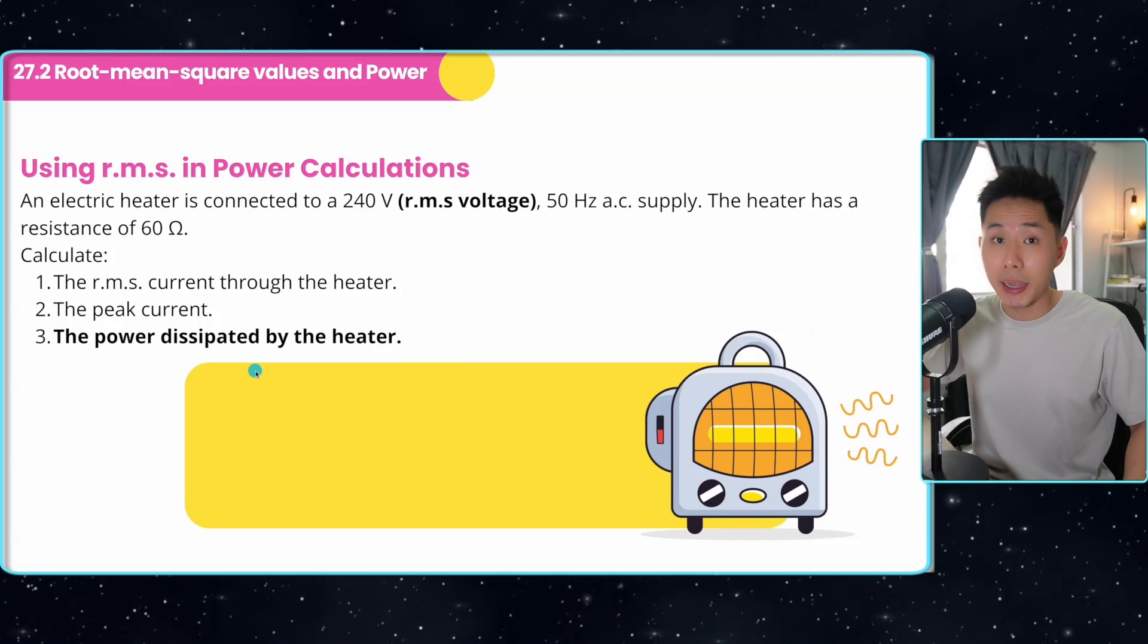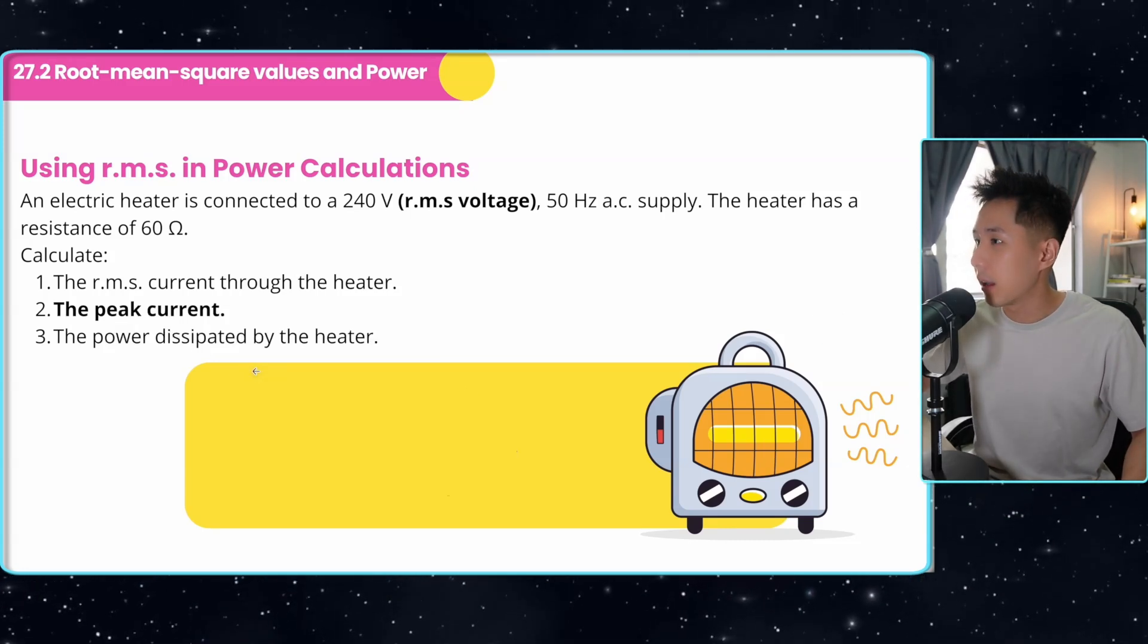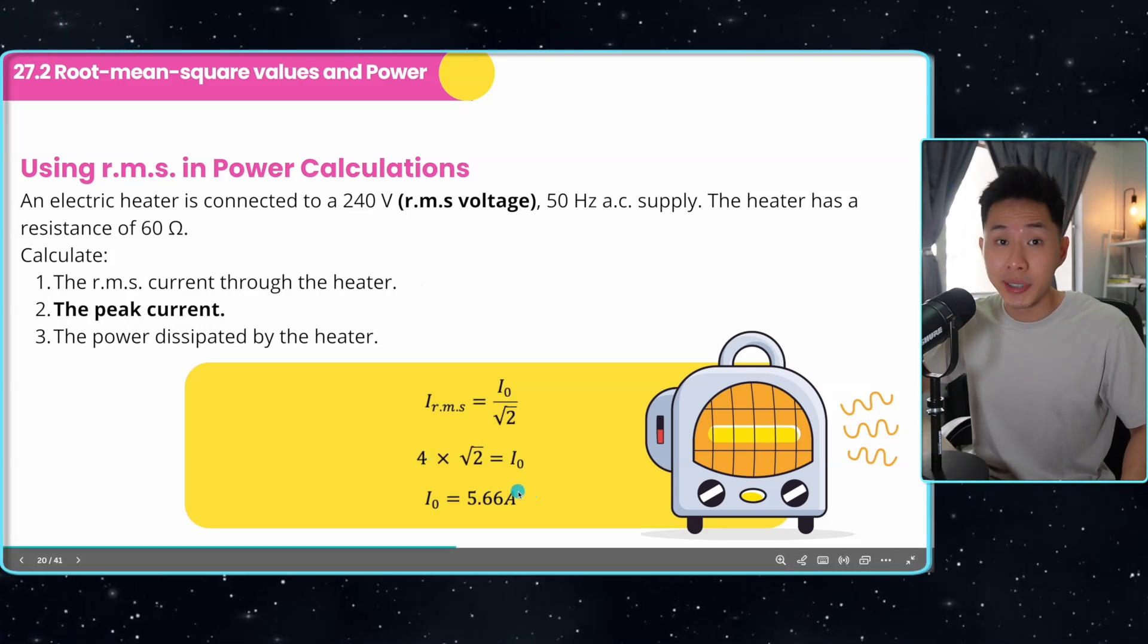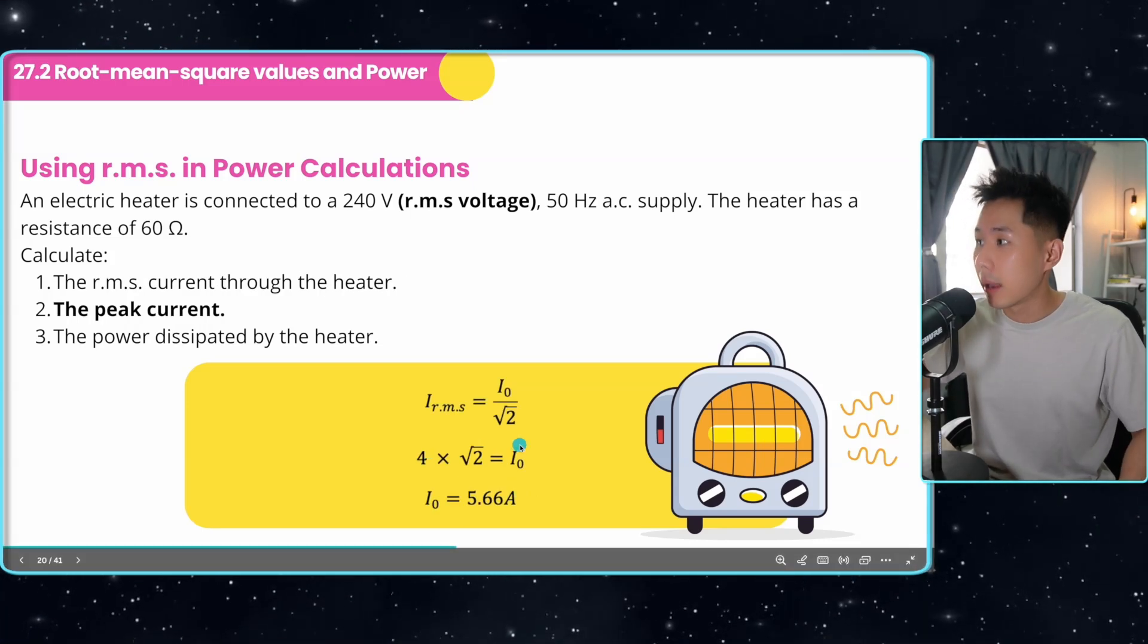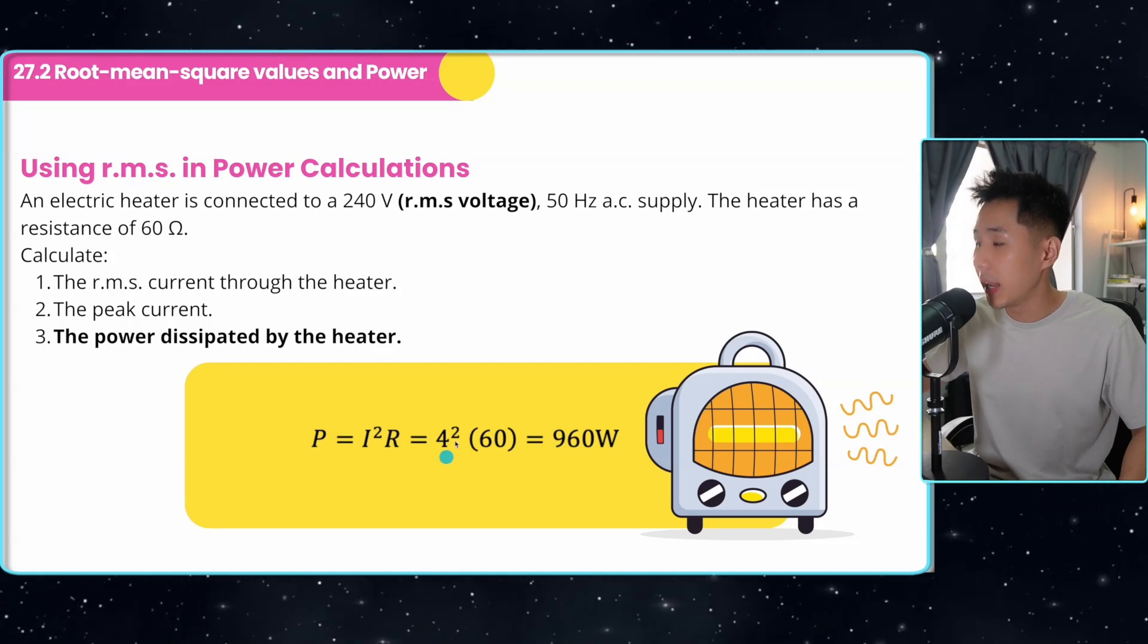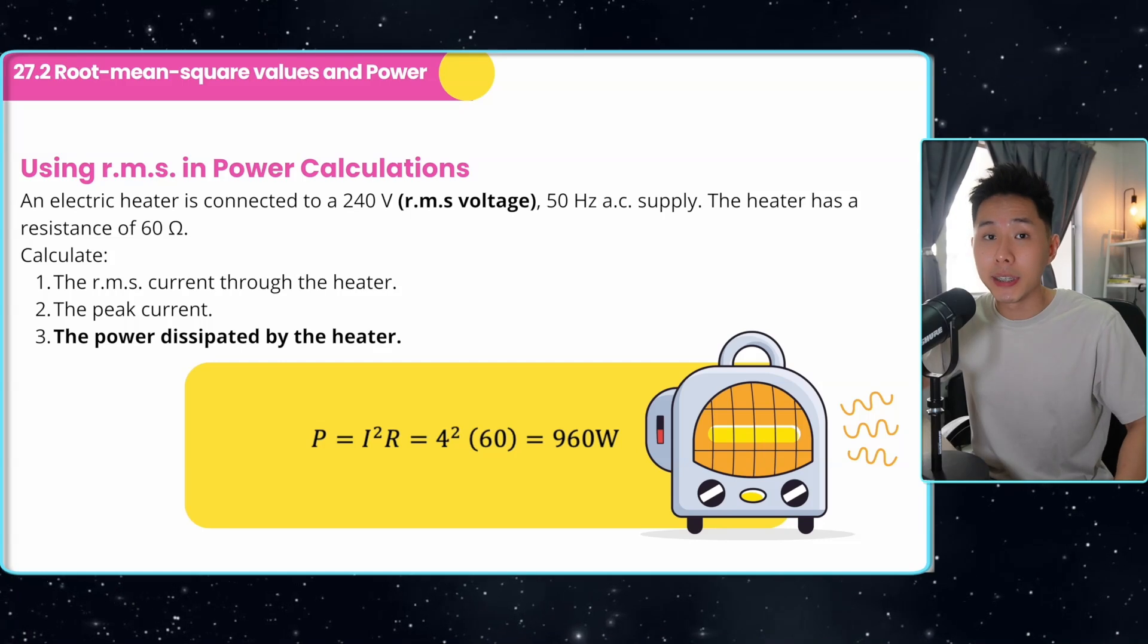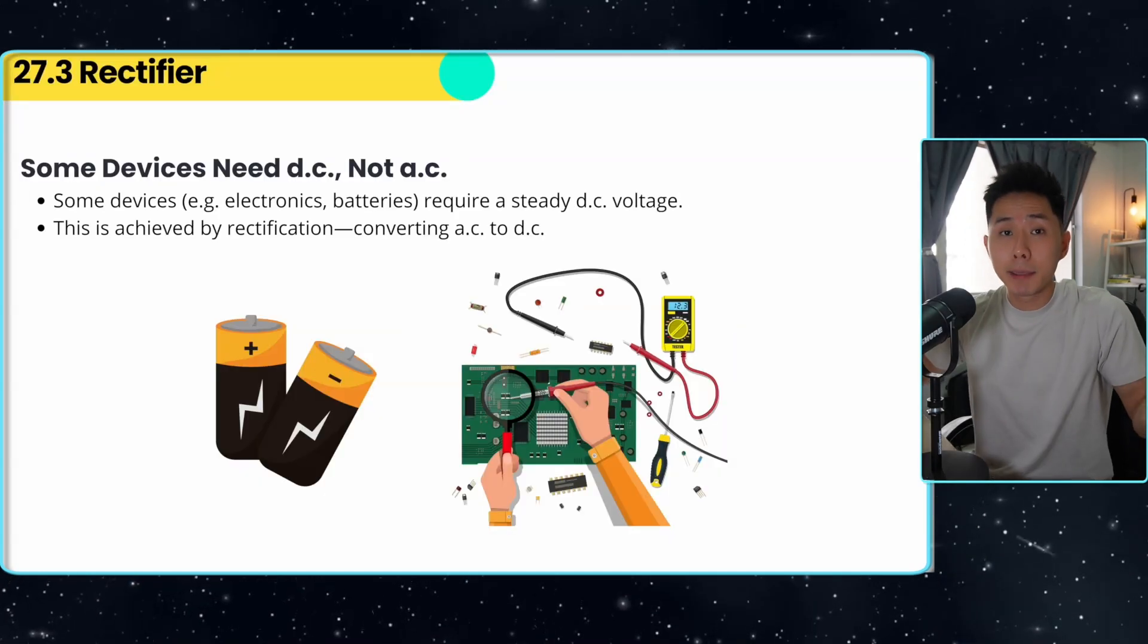Last but not least, the power dissipated by the heater. This is sort of a trick question. You have calculated two currents, 4 ampere and 5.66. Which one should you use? I reminded everyone that we should all use the RMS value. That's why I only use the value 4 in my equation. With that, we have the power dissipated by the heater. And now in the next part of the video, we're going to look into what rectifier is.